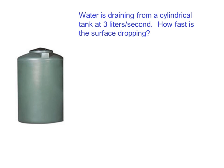Another example. Water is draining from a cylindrical tank at 3 liters per second. How fast is the surface dropping? We know that the volume is changing at a rate of negative 3 liters per second. So we have dV/dt equals negative 3 liters per second, or negative 3,000 cubic centimeters per second.